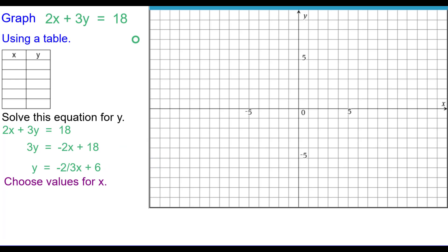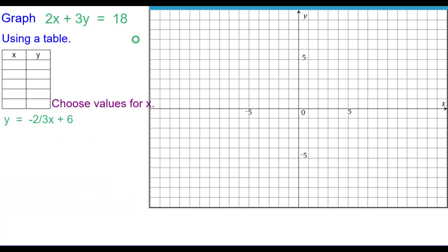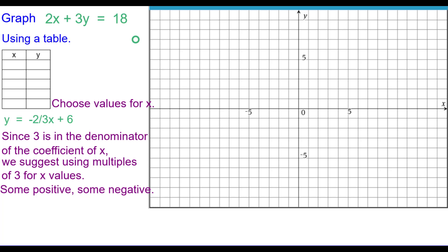So let's go ahead and choose values for X to substitute in to find what Y is. But we're going to select values that are easy to work with. So we want you to think of 5 values for X that are nice, that is easy to work with. So go ahead and pause to answer that and resume when you're finished. So choosing values for X, we decided since 3 is in the denominator of the coefficient of X, we suggest using multiples of 3 for X values. Some positive and some negative. So pause to answer and resume when you're finished. Here are the 5 values that we selected that are all multiples of 3 including 0.